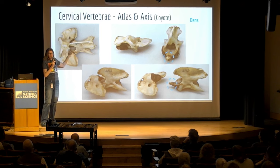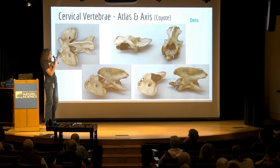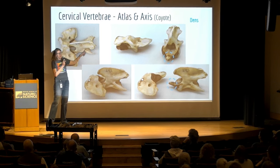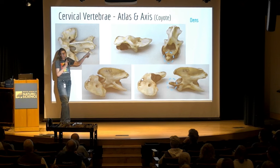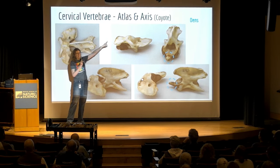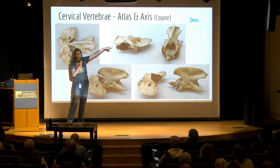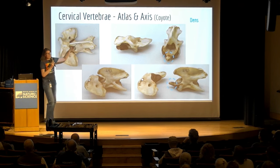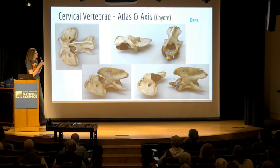This articulation — the atlas-axis joint — is the joint that lets you do this side-to-side motion. So the yes-joint and the no-joint. Part of how you can remember the order is that A, as in atlas, comes before X, as in axis, in the alphabet. Yes-joint, no-joint: atlas, axis. They're really cool.